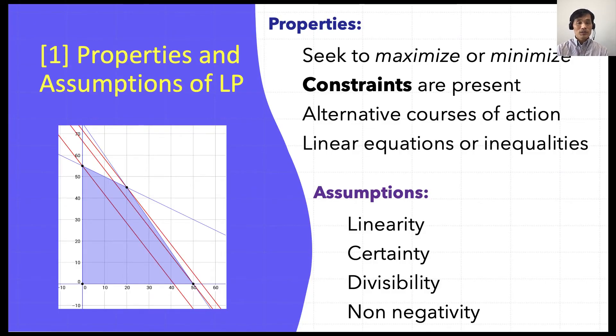Here are properties and assumptions of linear programming. Linear programming's properties is that it seeks to maximize or minimize given the constraints. So you want to either maximize the profit or minimize the cost, maximize the utility or minimize the pollution. Such things can be the properties of linear programming.